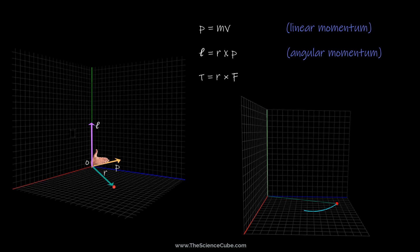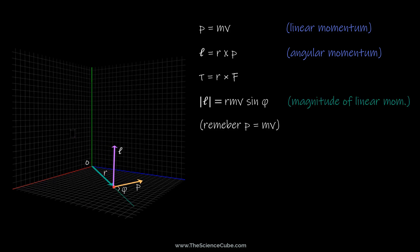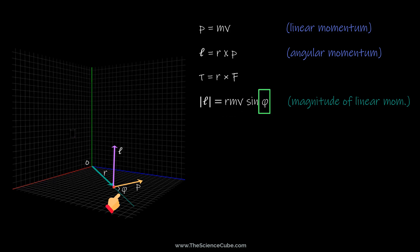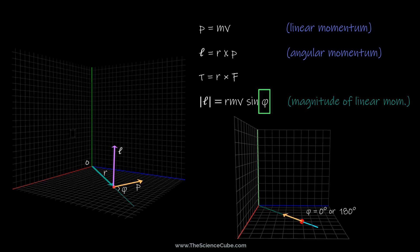The magnitude of angular momentum is r·m·v·sin(φ). This tells us that the magnitude depends not only on r, m, or v, but also on the angle φ. So if an object moves directly towards or away from the origin, φ becomes zero and its angular momentum also becomes zero.